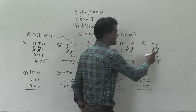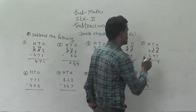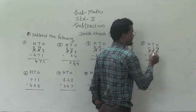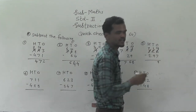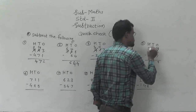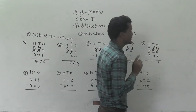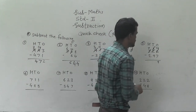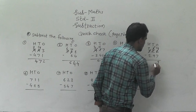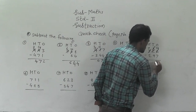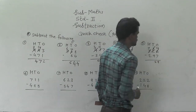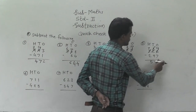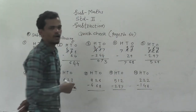Then 1 minus 9 — not possible. So regroup this 800 into 700 and 10 tens, and that 10 tens add into this 1 ten, so here 11 tens are there. Now 11 minus 9 is 2. Then 7 minus 2 is 5. So 529 is the answer.